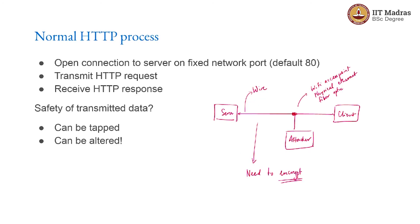One other thing that could potentially be done is that it is not just about getting the information. If they actually have a tap, they could potentially even alter the information. They could take a GET request from you and change it into, say, a POST request that changes your email ID or something of that sort, because they could flip the link through themselves in order to change the information being sent.